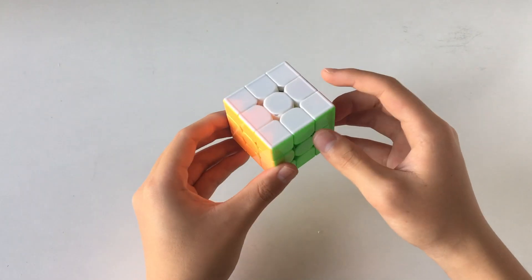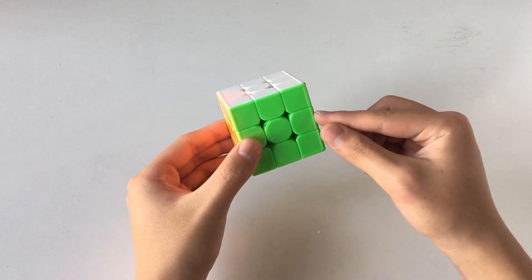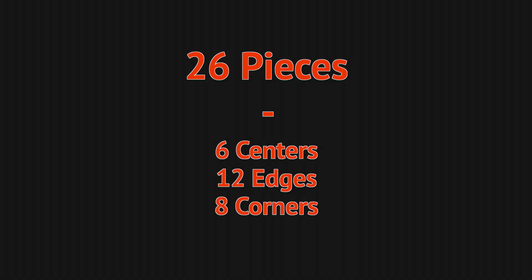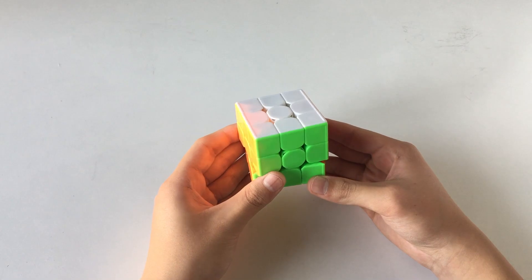A normal Rubik's cube has 26 pieces. There are six center pieces, which do not move relative to the other center pieces, so we will ignore these in this video. There are 12 edge pieces, four on the top, four on the middle layer, and four on the bottom layer. There are also eight different corner pieces, four on the top and four on the bottom.